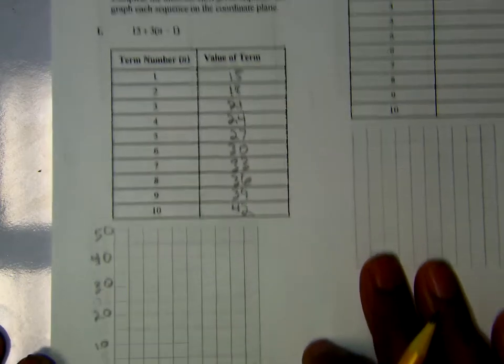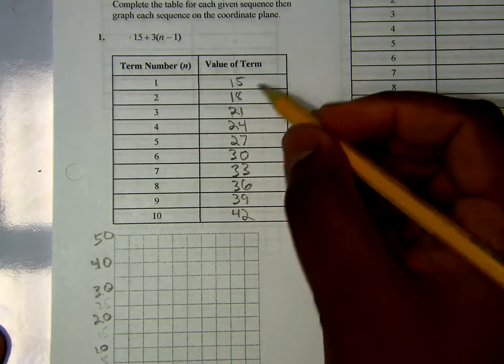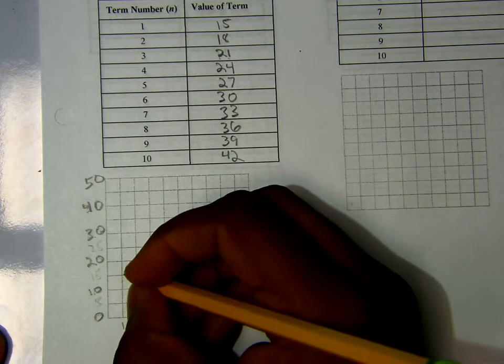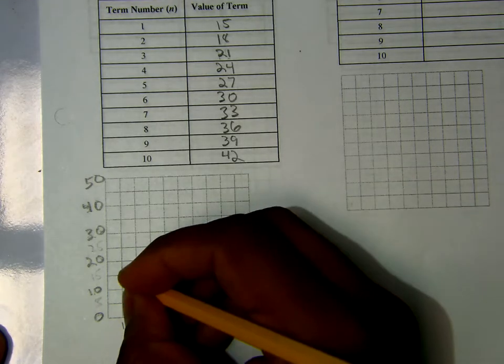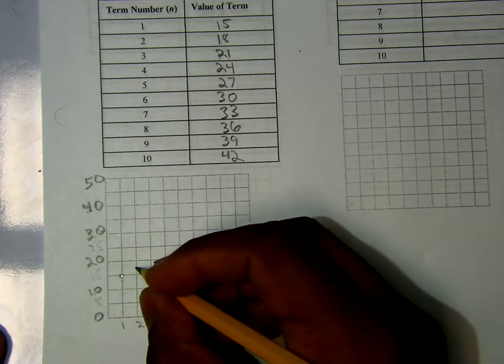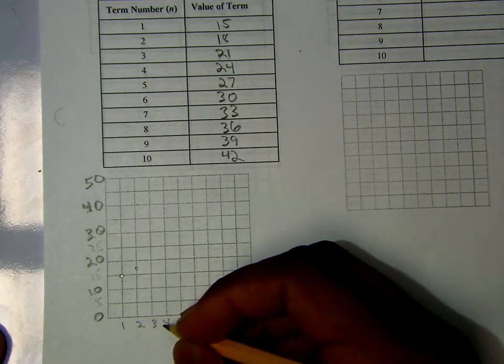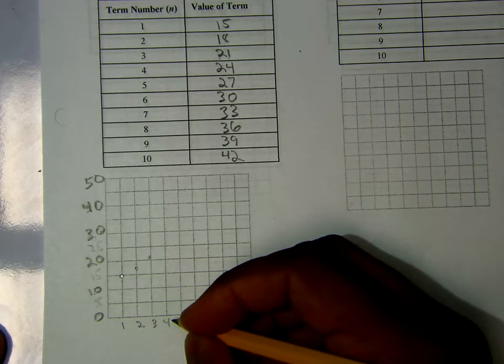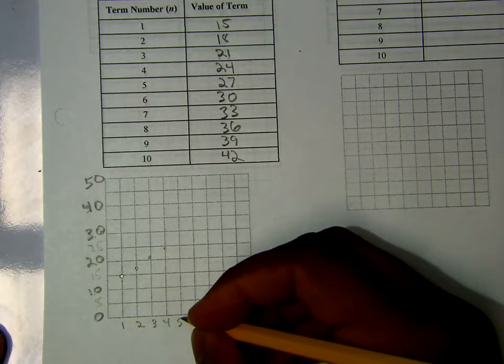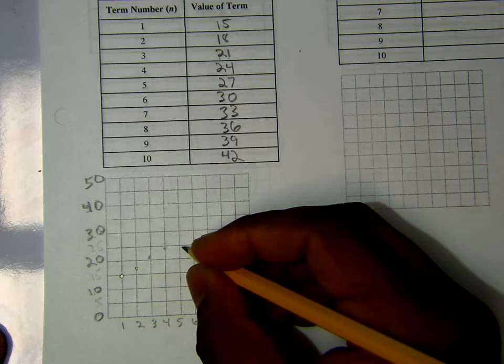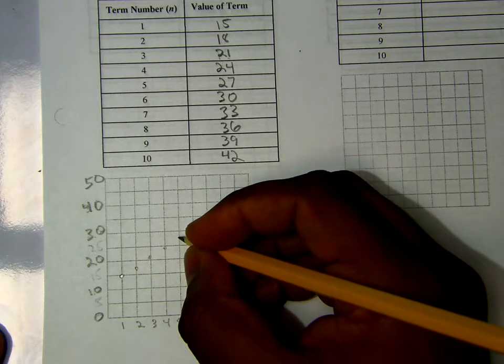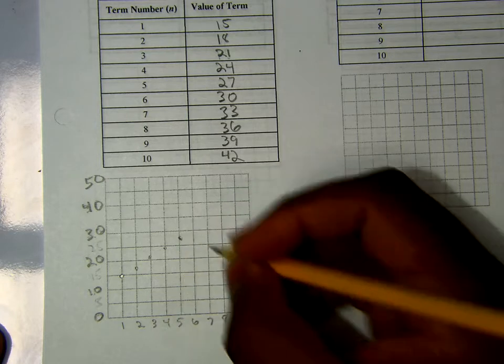Next, I'm going to go ahead and plot out each one of these points, starting with 1 and 15. So at 1 and 15, I'm going to go over 1 and up to 15 here. Then at 2, I'm going to 18, about right in here. At 3, I'm going to 21. At 4, 24, right in here. And just keep on going. 5 is up to here.